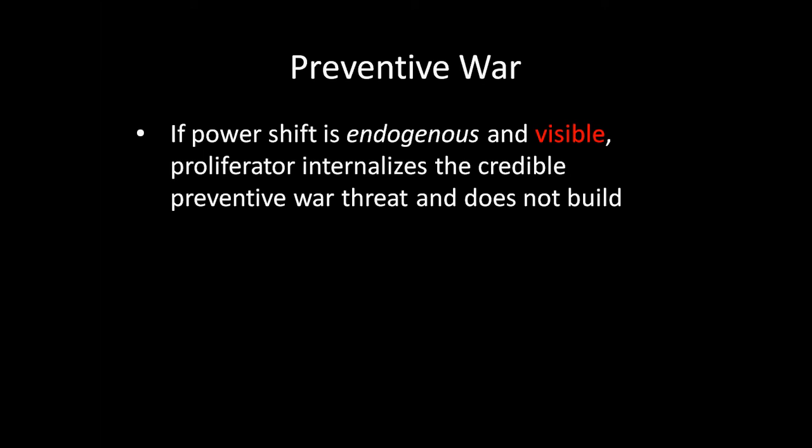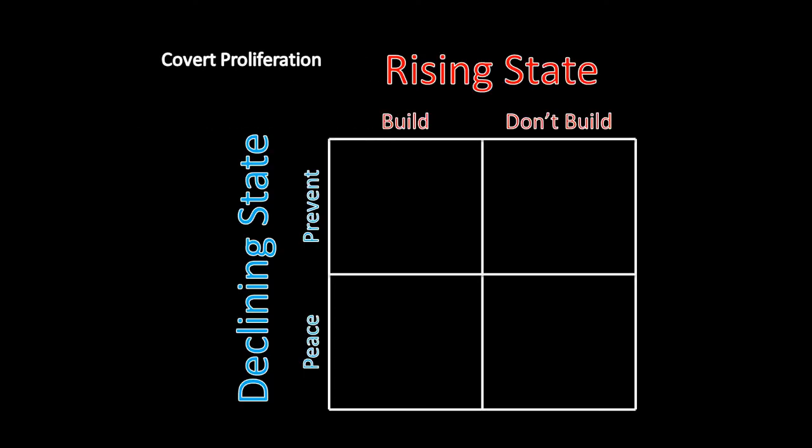We haven't exactly seen a scenario that looks like this, though we've seen two-by-two game frameworks like this before — like a Prisoner's Dilemma and a Stag Hunt. But covert proliferation has a different feel to it. In this structure, we have a declining state that can launch a preventive war or pass and essentially keep the peace, and a rising state that can choose whether to build or not. Importantly, each player moves without knowing what the other person has done. So the declining state, when it chooses whether to launch a preventive war or not, doesn't know whether the rising state has built — or is trying to build — a nuclear weapon.